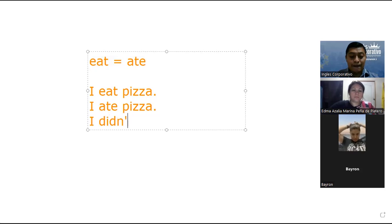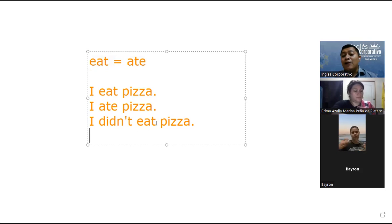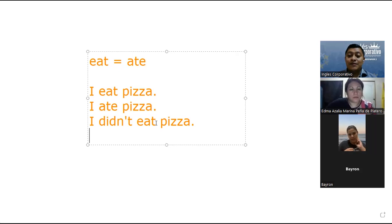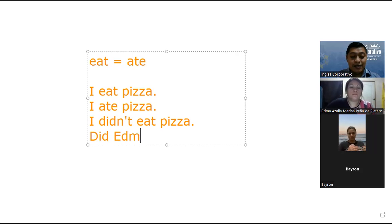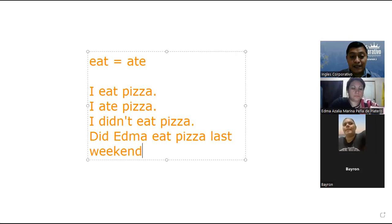We need to use 'didn't' and the verb in its base form, or in present. Now, if I want to ask a question — for example, if Edma ate pizza last weekend — how do I make a question? Did Edma eat pizza last weekend? We need to put the auxiliary at the beginning of the sentence: 'Did,' then the subject, and the verb always goes in its base form. Did Edma eat pizza last weekend? Don't forget the question mark.